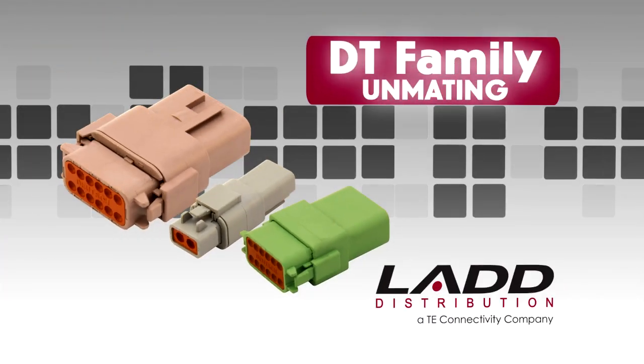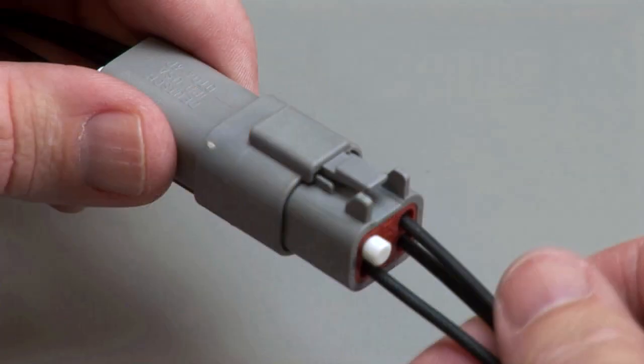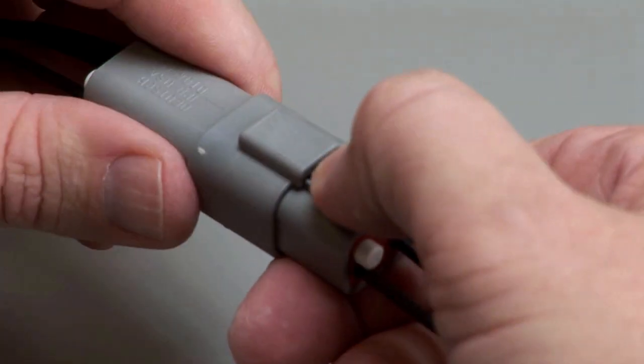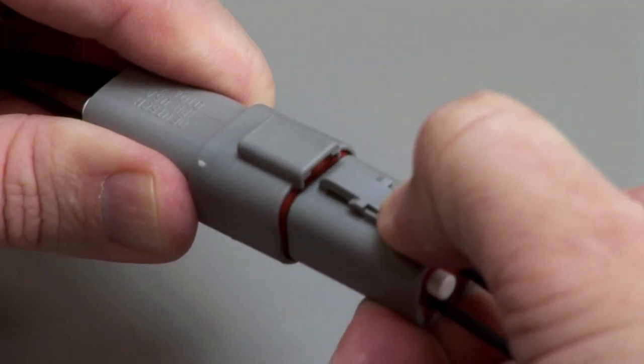DT unmating. To unmate a DT series connector, depress the locking latch on the outside of the plug while pulling the plug and receptacle apart.